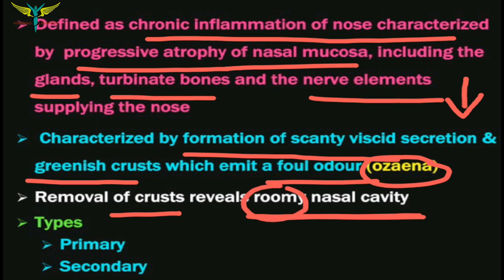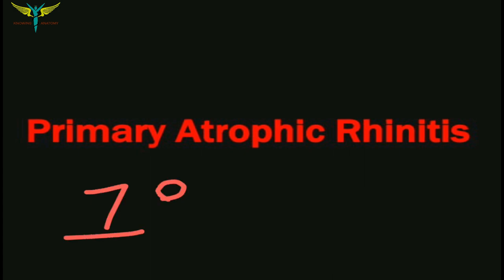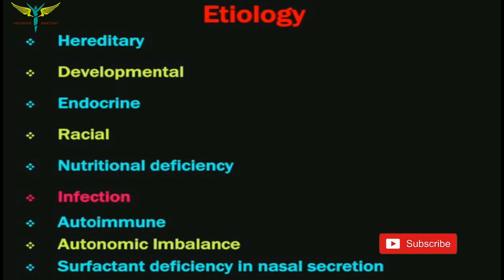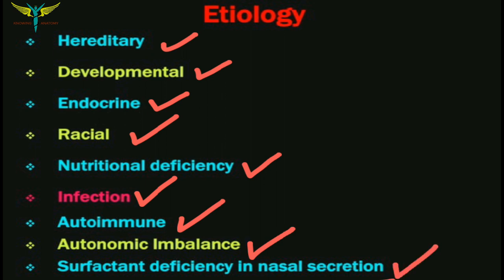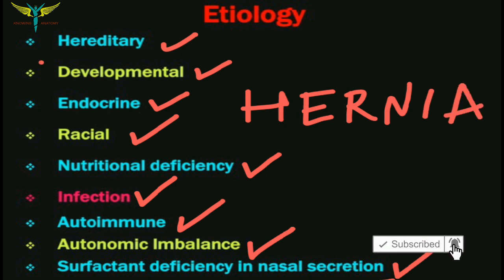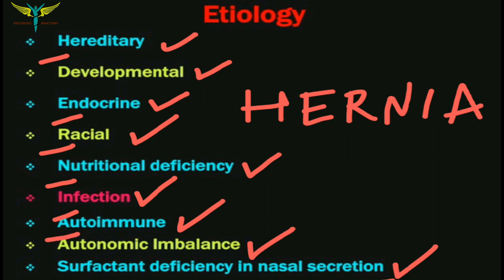Atrophic rhinitis is of two types: primary and secondary. For primary atrophic rhinitis etiology, this chronic inflammation of the nose can be due to hereditary, developmental, endocrinal, racial, nutritional deficiencies, infection, autoimmune causes, autonomic imbalance, and surfactant deficiency in the nasal secretion. You can remember the etiology by the mnemonic HERNIA: H for hereditary, E for endocrinal, R for racial, N for nutritional, I for infection, and A for autoimmune or autonomic imbalance.